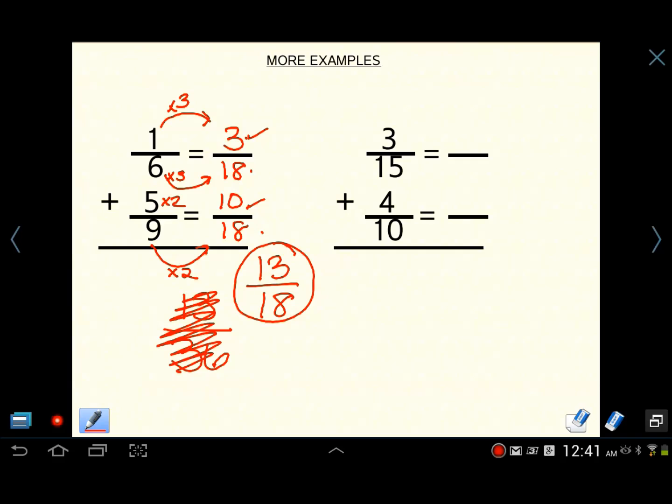Now on to our second example. We have denominators of fifteen and ten. Notice how I'm focusing on those numbers first. What number does fifteen and ten both go into? Multiples, right? We're looking for multiples. And if you are thinking thirty, then you are right. Thirty is a multiple of fifteen and thirty is a multiple of ten.